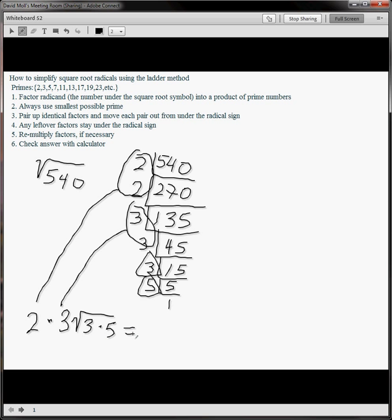That equals 2 times 3 out front of the radical is 6. Left under the radical, 3 times 5 is 15. And check and make sure that 6 root 15 is the same as the square root of 540.